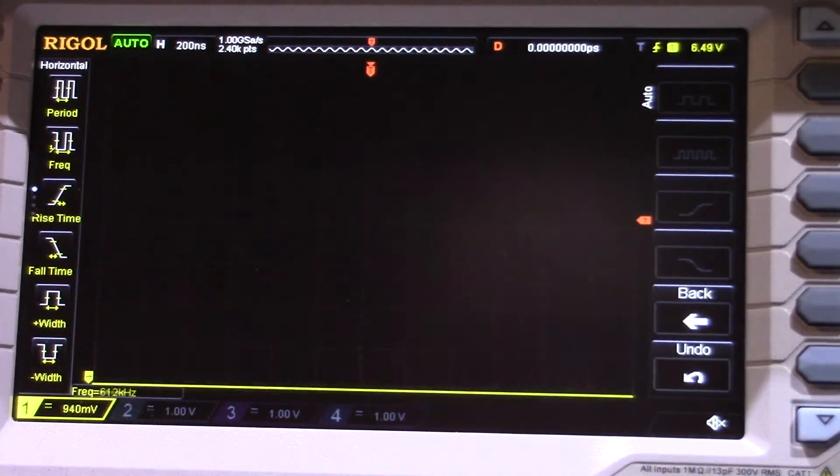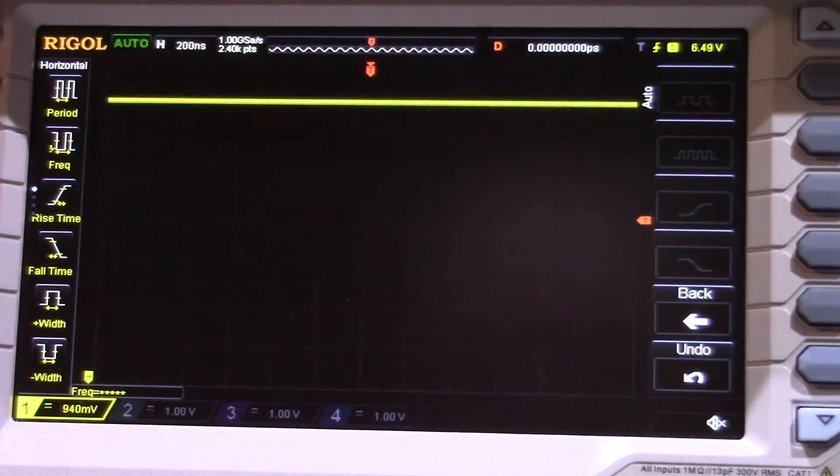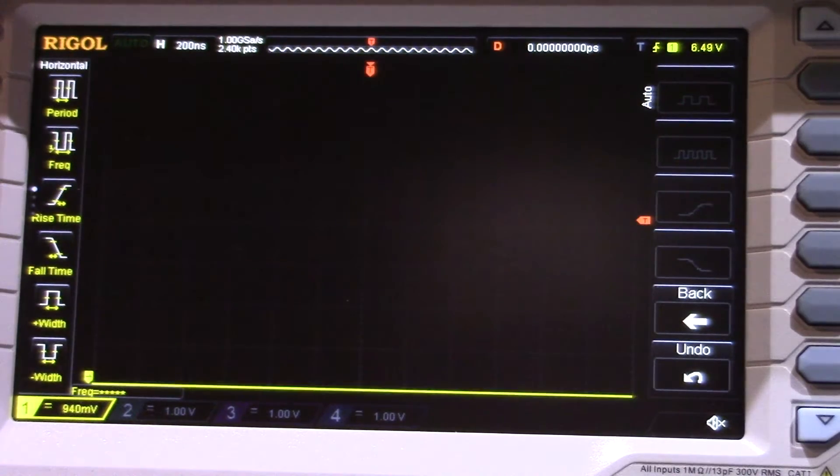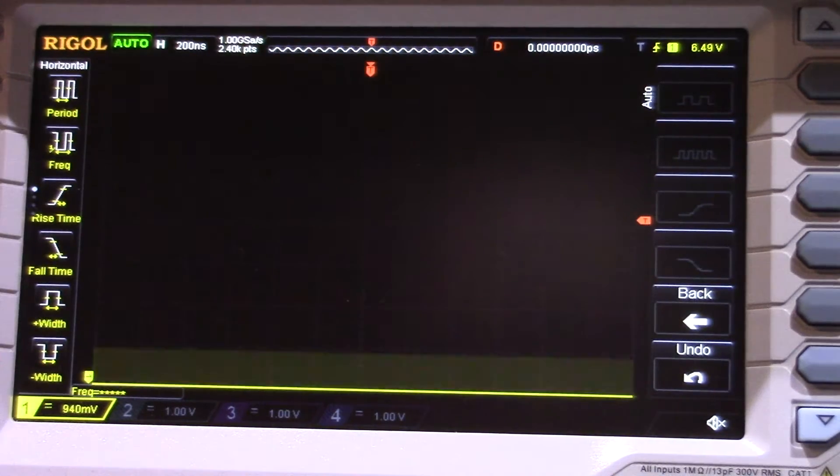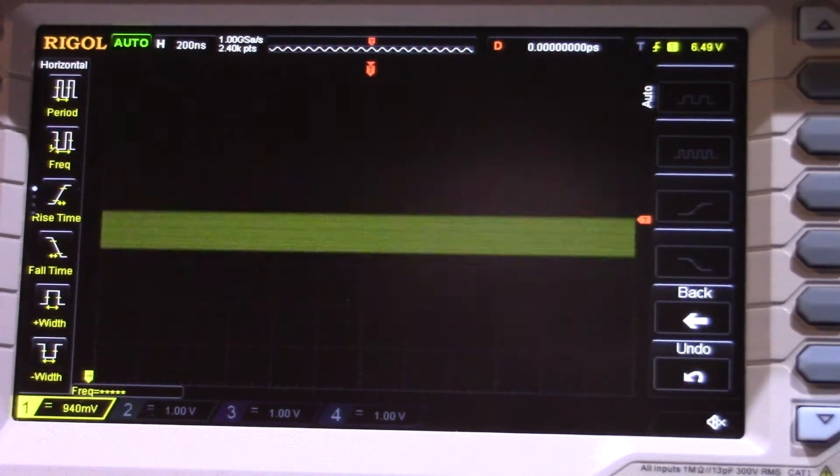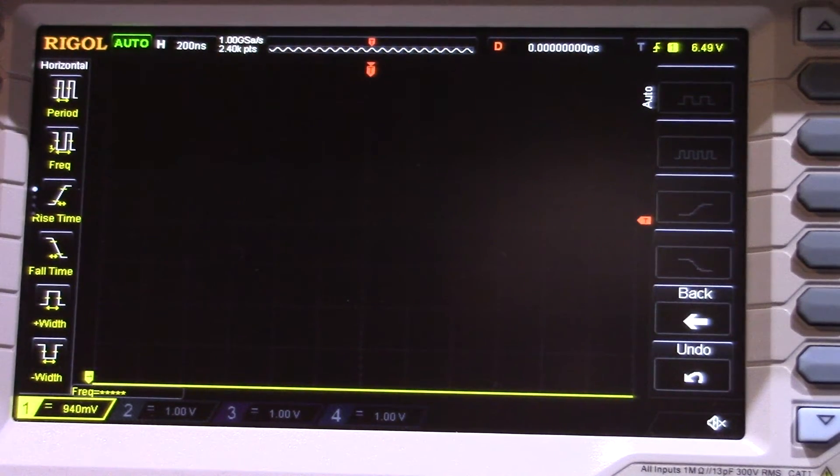Now I have still had some issues trying to get this to trigger correctly on a lower frequency. As you can see, I've currently got it set on 1 to 10 Hz, so I'm actually just going to cheat and hit the auto button and see if I can get the scope to trigger on that.